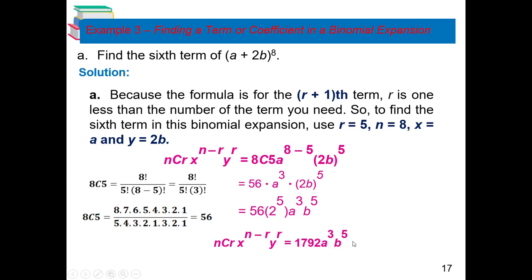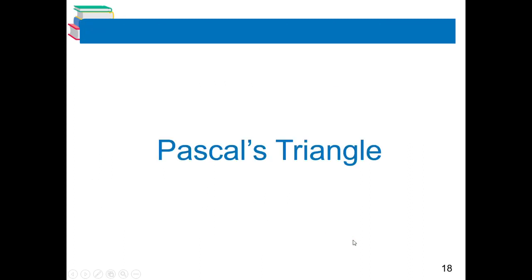I hope that's understood. So if you are looking for the 6th term, your sixth term is 1792 A³B⁵. That is your 6th term.